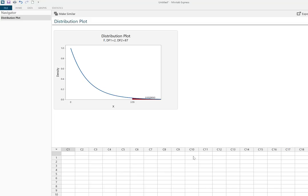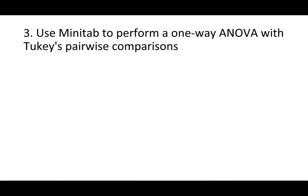We'll go back to the PowerPoint slides now to cover our third learning objective: use Minitab to perform a one-way ANOVA with Tukey's pairwise comparisons. Before we go back to Minitab Express, I want to run through the five-step hypothesis testing procedure for an ANOVA and introduce Tukey's pairwise comparisons so you can see what the software is computing for you.